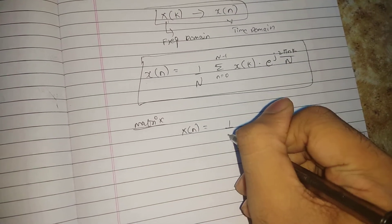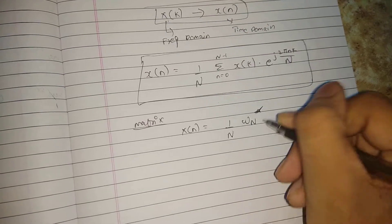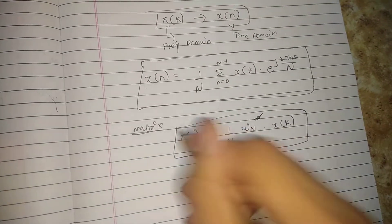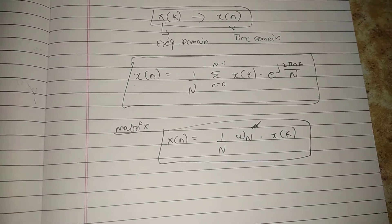1 by N omega N star into x(k). This is the formula to calculate using the matrix method.